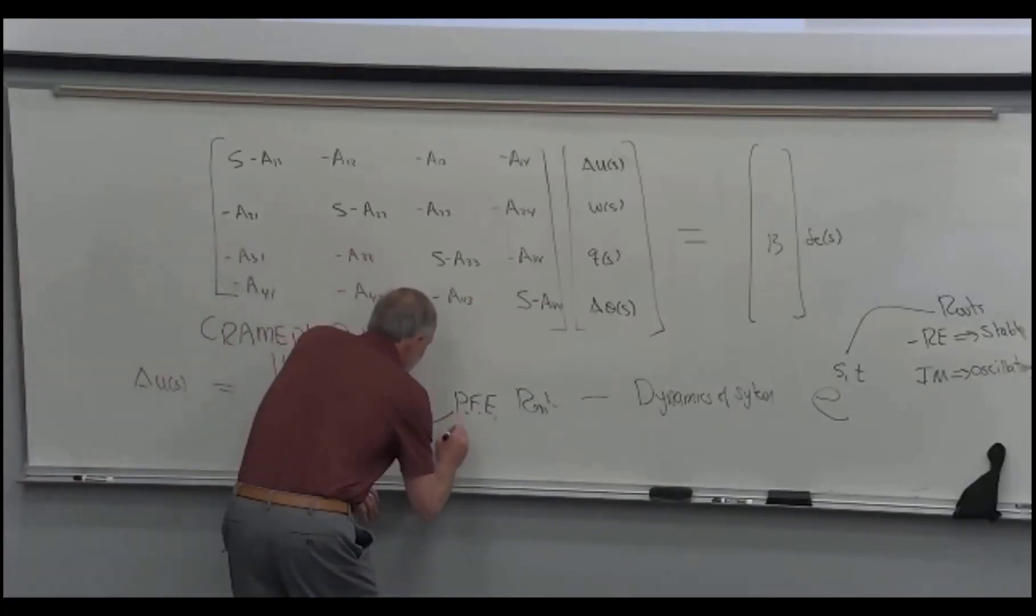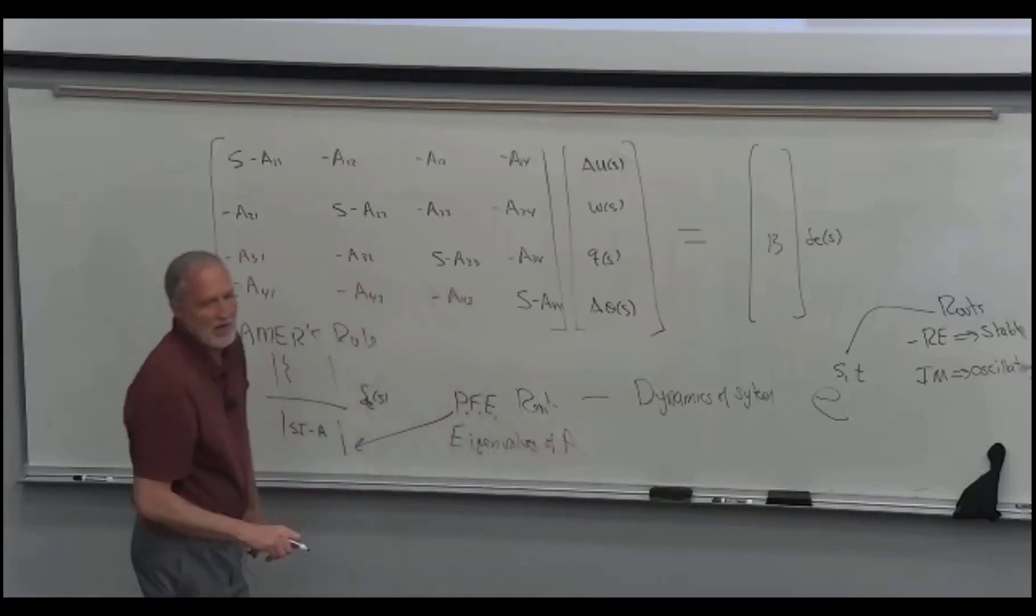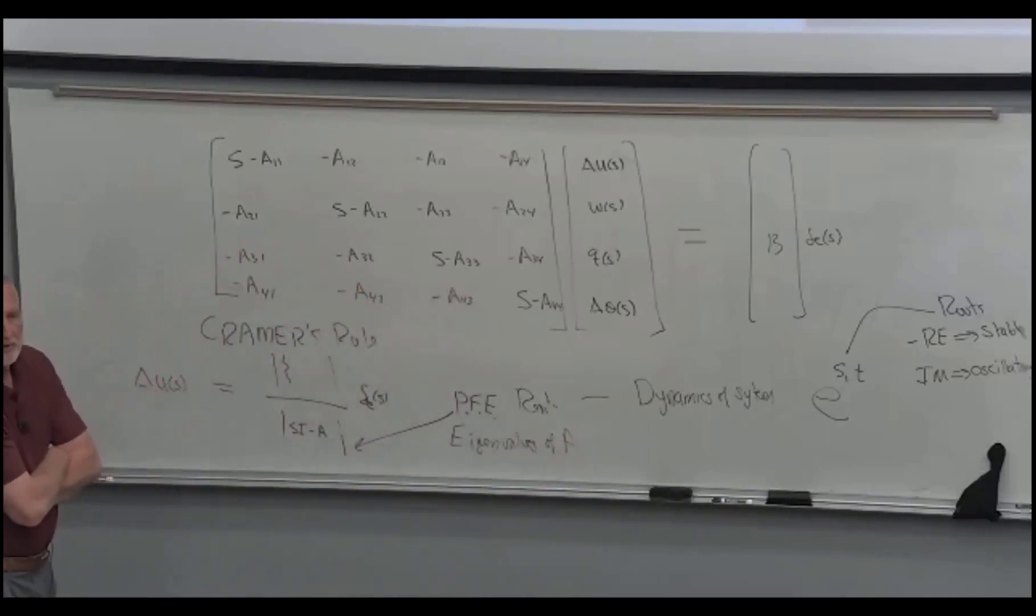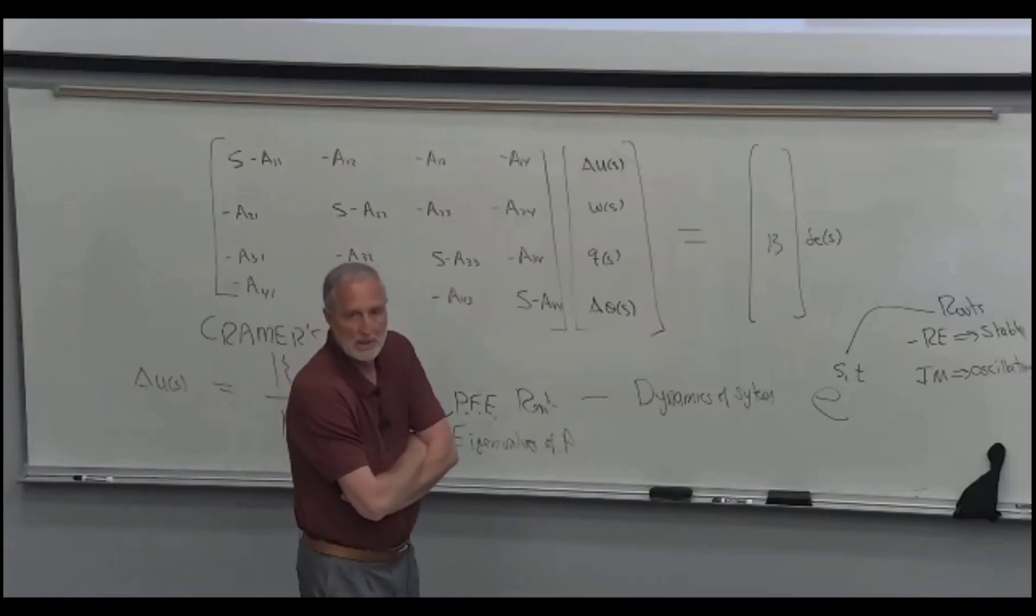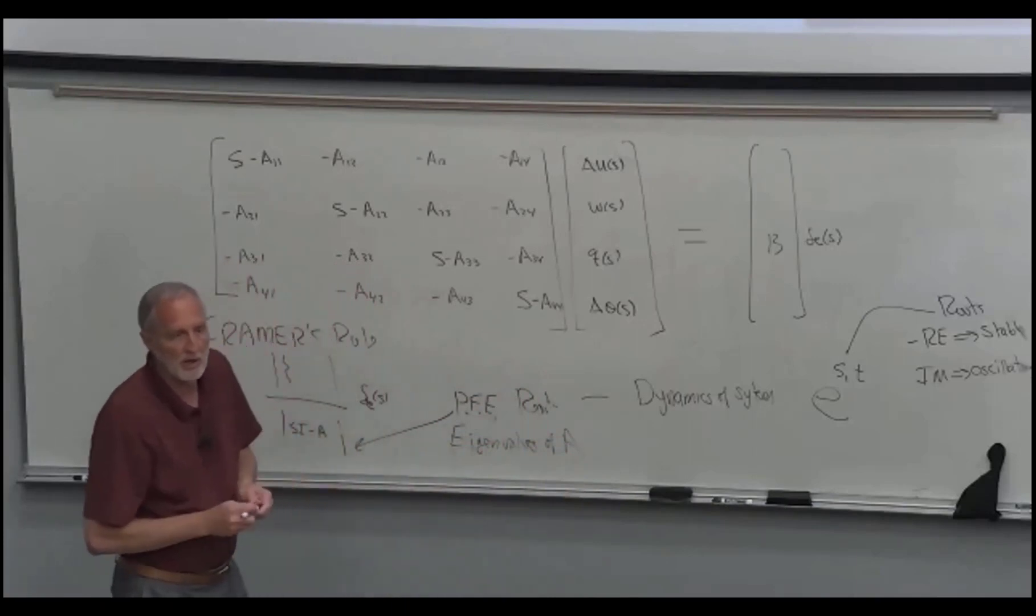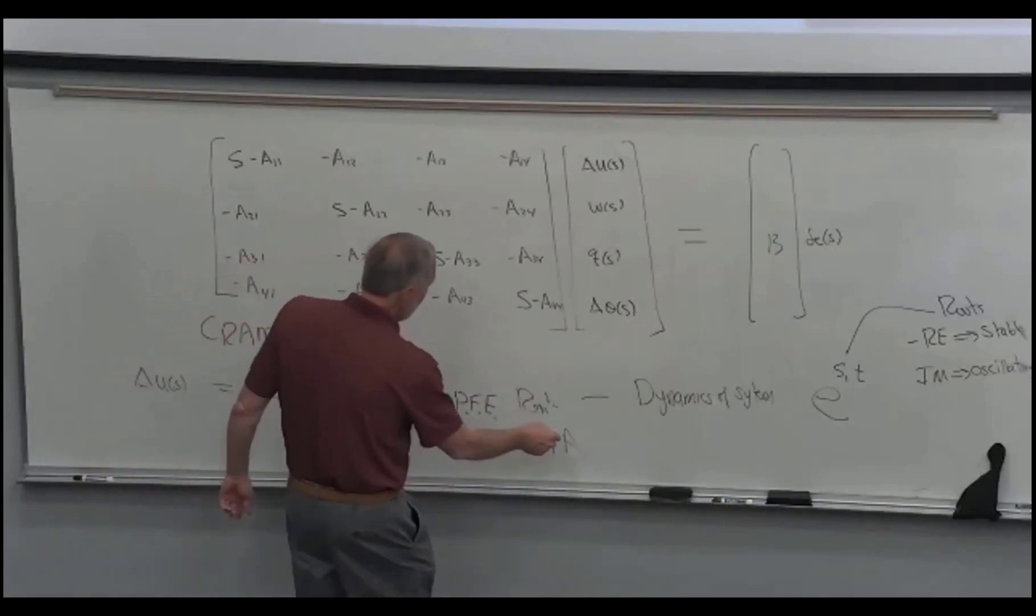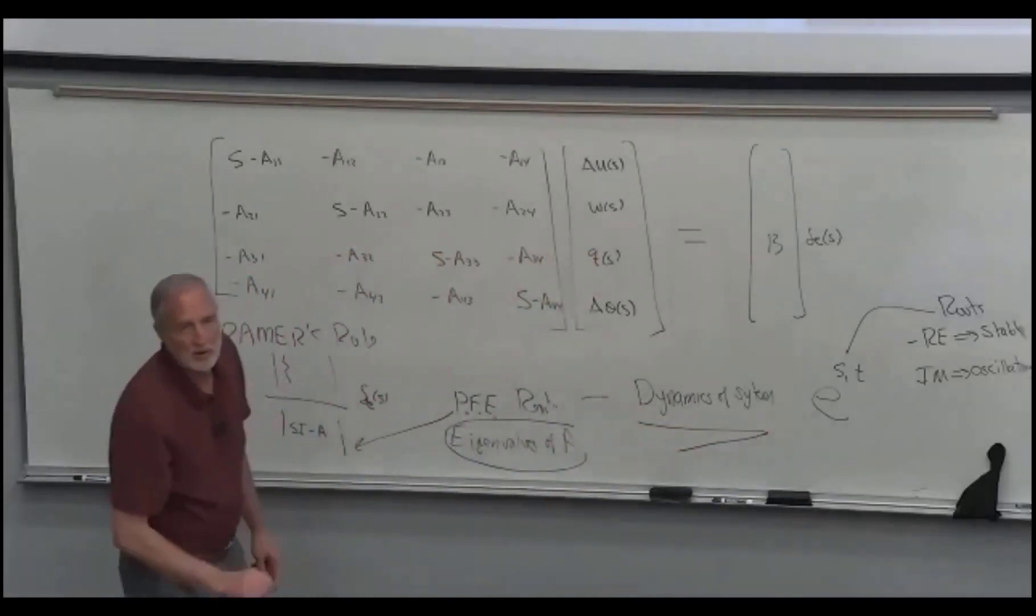In fact, notice these are the eigenvalues of A. The convenience of the state space form is that once you put your equations in state space form, you're done. You don't have to do the partial fraction expansion to find your dynamics. If you want to know whether it's stable or oscillatory, you just put it in state space form, find the eigenvalues of A, and then you know what your dynamics are going to be.